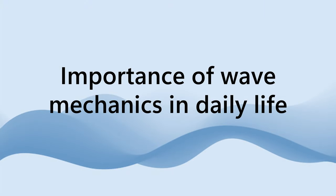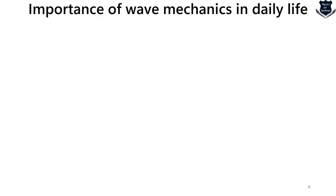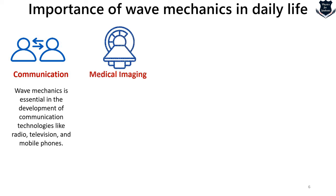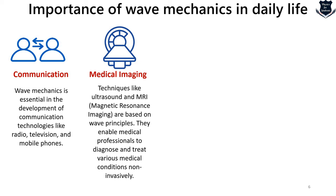In terms of the importance of wave mechanics in daily life: communication, which is the most important thing, starts from wave mechanics. We break down a wave in Fourier analysis — radio, television, mobile phones — and analyze and understand things better. In case of medical imaging, for example MRI, which stands for magnetic resonance imaging, these are also based on wave principles. Medical technology is being improved using wave mechanics in order to diagnose and treat various conditions in a non-invasive manner.